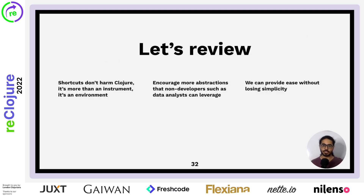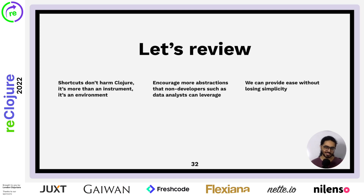So, in review: shortcuts don't harm Clojure. It's more than an instrument — it's an environment. An environment that can produce output that solves problems. We can encourage more abstractions so that non-developers such as me — a data analyst with no CS experience — can pick it up and leverage it. And we can provide that ease without losing simplicity. We can always wrap things in parentheses and remove those parentheses when we don't want the ease.